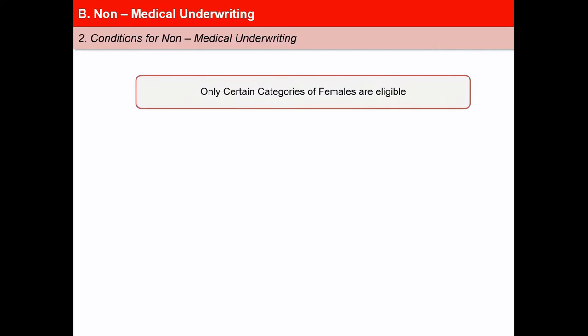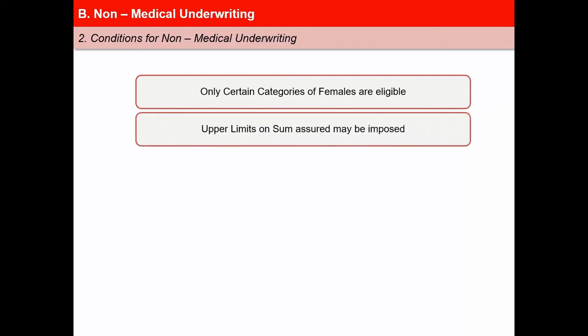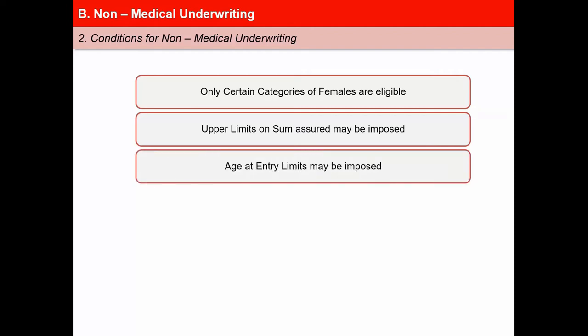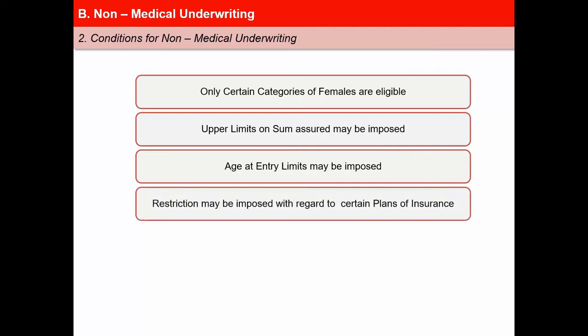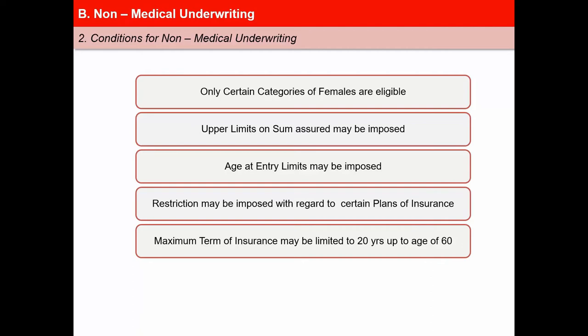However, non-medical underwriting calls for certain conditions. First, only certain categories of females like working women may be eligible. Second, upper limits on sum assured may be imposed — for example, any case having a sum assured beyond 5 lakhs would be subjected to a medical examination. Third, age at entry limits may be imposed — for example, it is compulsory to get a medical examination done for persons above 40 or 45 years of age. Fourth, restriction may be imposed with regard to certain plans — for example, term insurance may not be allowed under non-medical category. Fifth, maximum term of insurance may be limited to 20 years up to age 60.